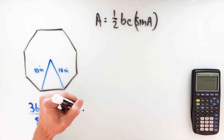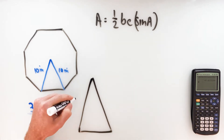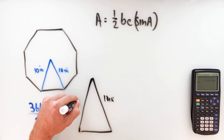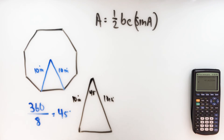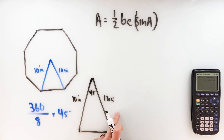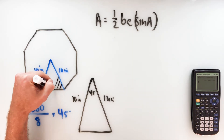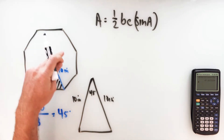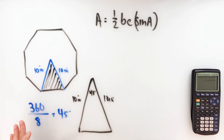I'm going to draw this triangle a little bigger to work inside — 10 inches on each side, with the 45-degree angle at the top. Using our formula, we can find the area of this triangle where we have two sides and the included angle of 45 degrees. Since we know this regular octagon has eight of those congruent triangles all the way around, once I get the area of this one triangle, I can just multiply by eight to get the area of the whole octagon.